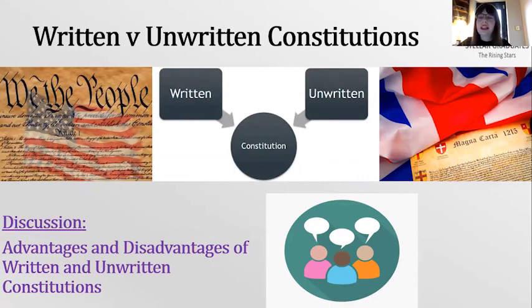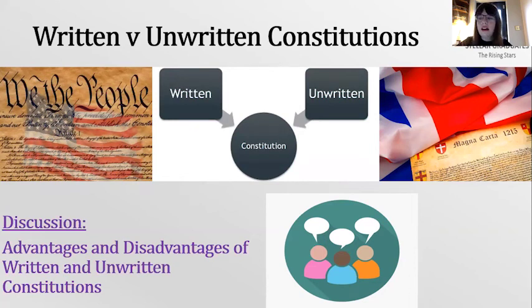You've all identified the key points. For a written constitution: it's clear, in one document, easy to access, easy for citizens to become aware of their rights — but it's harder to change, the amendment process involves a series of checks, and it can impose the ideals of the 1700s into today. For an unwritten constitution: it can be unclear, not streamlined, difficult to access, with a transparency issue — but it is more flexible, more responsive, and can be changed to fit modern times.